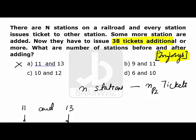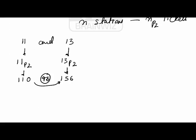In the same fashion, let me take you to the second option, 9 and 11. Let's assume that you have 9 stations before adding and 11 stations after adding. If you have 9 stations, the number of tickets you want is 9P2. If you have 11 stations, then the number of tickets is 11P2.